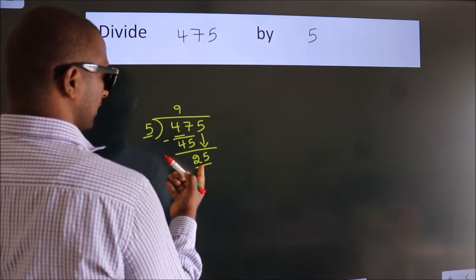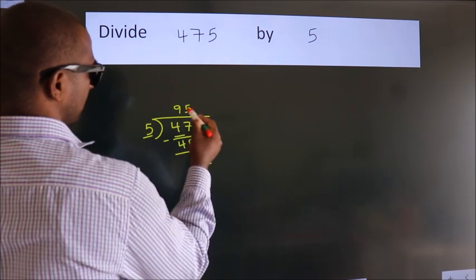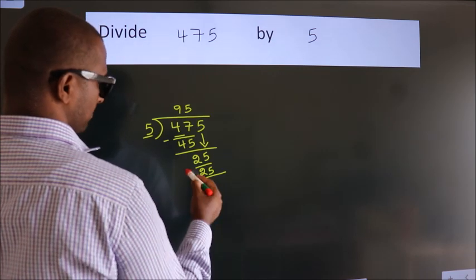When do we get 25 in the 5 table? 5 fives, 25. Now we subtract.